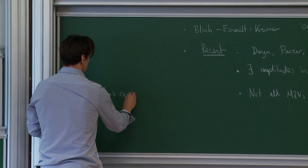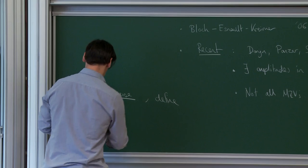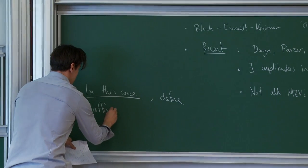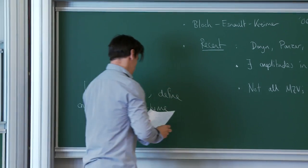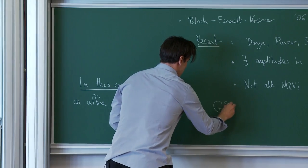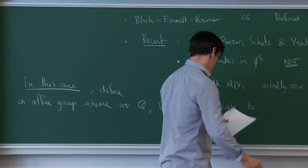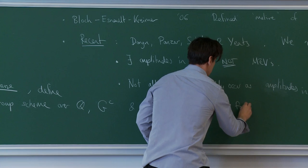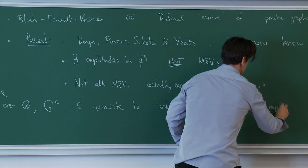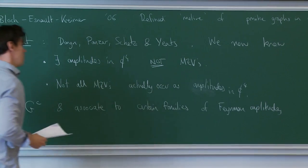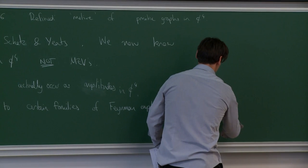So in this course we will define an affine group scheme — this is slightly inaccurate, it will really be several affine group schemes, but for the introduction this will do — an affine group scheme over Q, called the Cosmic Galois group. And we will associate to certain families of Feynman amplitudes — which will be very general, depending on arbitrary masses and arbitrary momenta — a motivic period.